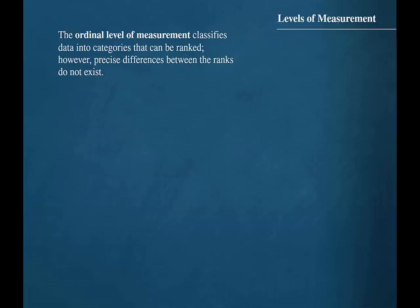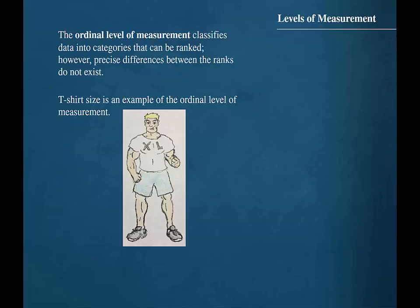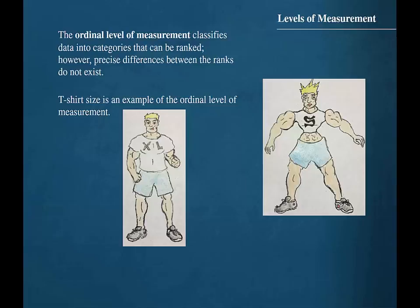The ordinal level of measurement classifies data into categories that can be ranked. However, precise differences between the ranks do not exist. T-shirt size is an example of the ordinal level of measurement. We can easily differentiate between and rank the sizes extra-large, large, medium, and small, but precise differences cannot be measured between the sizes.